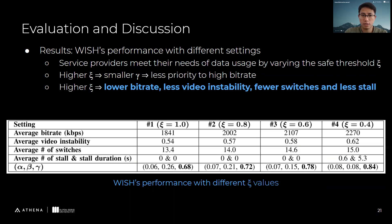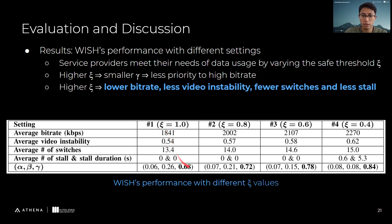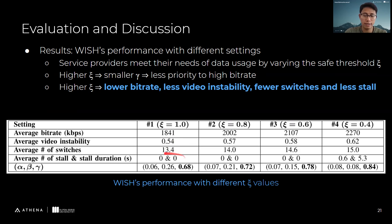For the next evaluation, we show the WISH performance with different settings. Service providers can meet their data usage needs by varying the safe threshold C. From this table, we can see that with a higher C, we have a smaller gamma, meaning less priority is given to high bitrate. As a result, we download lower bitrate, have less video instability, fewer switches, and fewer stalls in the streaming session.